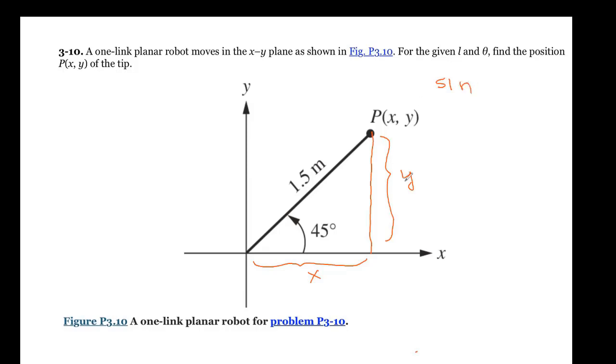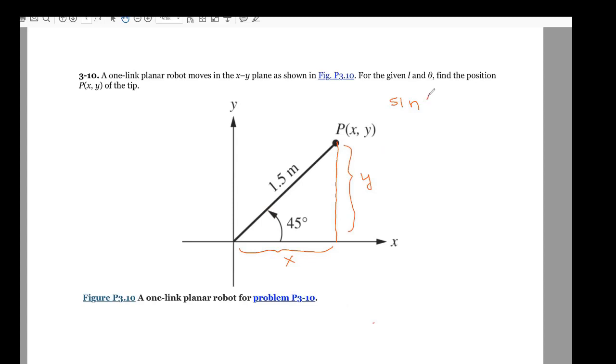If I start with the sine, I'm going to find Y. Sine of 45 degrees is going to equal the opposite, which is Y, over 1.5 meters. So Y is equal to 1.5 times the sine of 45 degrees.